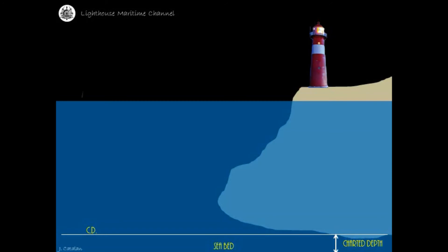Mean high water spring is the average level of the high waters that occur at the time of spring tides. Spring rise is measured from the chart datum to the mean high water spring.